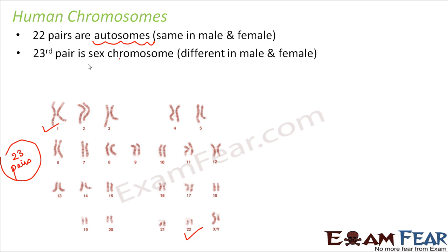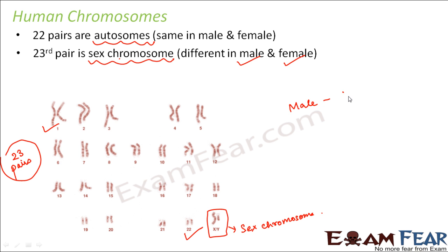What about the 23rd pair? The 23rd pair is the sex chromosome, which is different in males and females — and that is why it is called the sex chromosome, because this chromosome determines the sex of the person. In case of a male, this sex chromosome is XY — the two chromosomes in the pair are different from each other: one is X and one is Y, where one is longer and the other is shorter. In case of a female, both chromosomes are identical, which is denoted as XX.